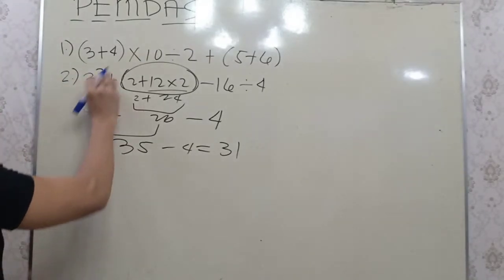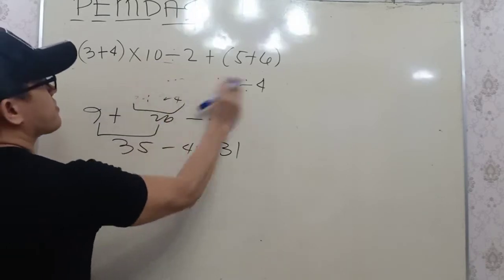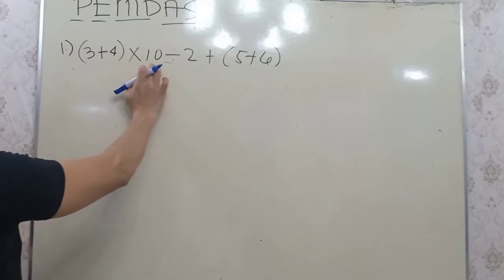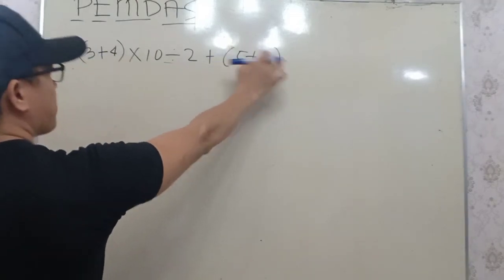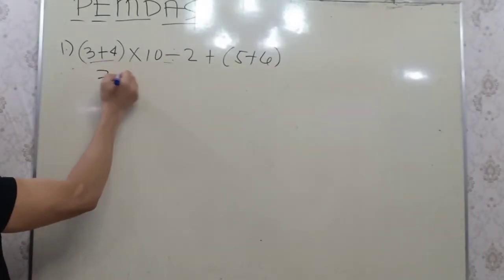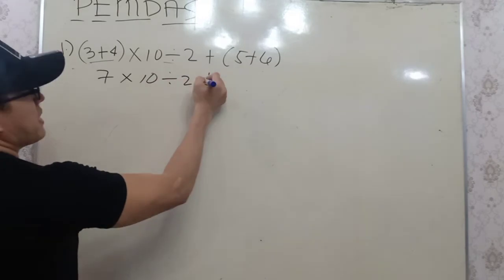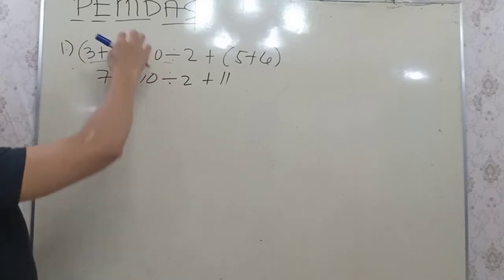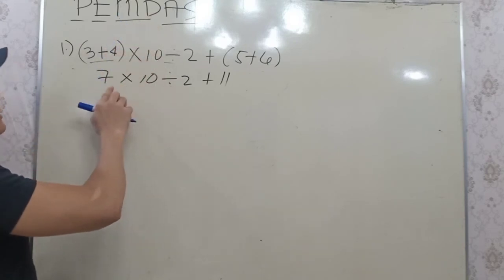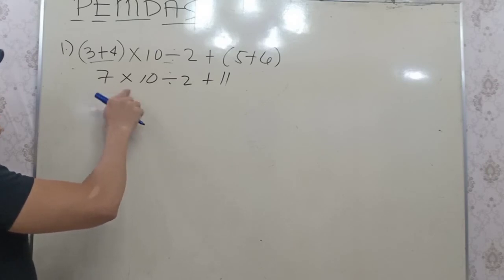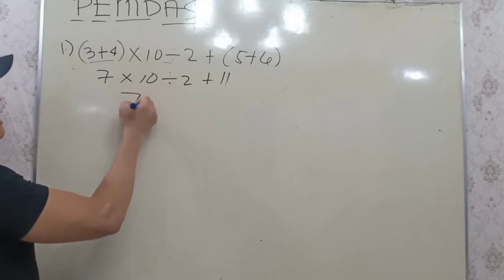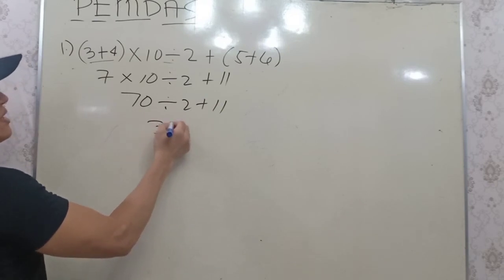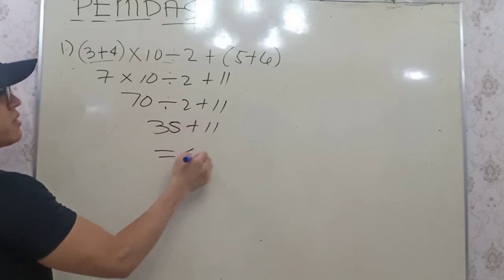Last number: we have 3 plus 4 in parentheses times 10 divided by 2, plus 5 plus 6 in parentheses. Parentheses first: 3 plus 4 is 7, and 5 plus 6 is 11. Now, multiplication comes before division from left to right, so 7 times 10 is 70. Then 70 divided by 2 is 35. Plus 11, this equals 46.